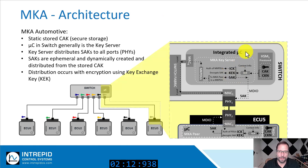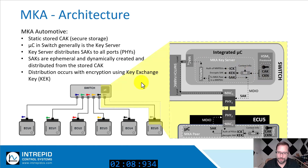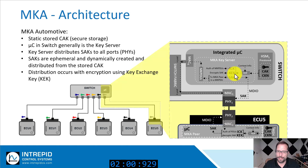These keys are also generated from the CAK, but have no random inputs because all participants must independently generate these keys. The ICK is used for the authentication of MKPDUs and the KEK is used to transport encrypted SAKs.